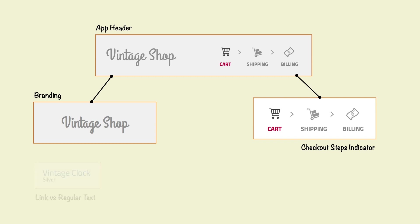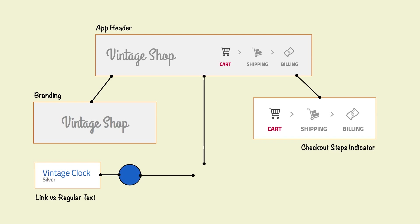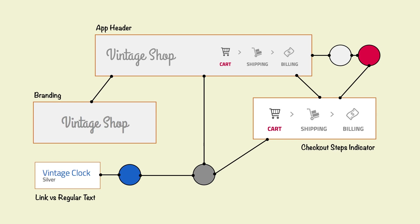For example, in our design, links are simply blue, and besides color, they inherit the styles of text where the link is placed. However, when the links are placed in the checkout steps indicator, new rules or styles are defined to convey the specific functionality that this molecule provides. Furthermore, when this molecule is placed in the app header, its color and size are directly related to the styles of the app header.